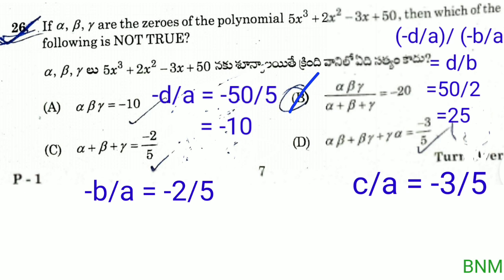Option B is product of the zeros divided by sum of the zeros. Product of the zeros is minus 10, sum of the zeros is minus 2 by 5. So that gives 50 by 2, which is equal to 25. But the given value is minus 20, which is wrong. Therefore, option B is not true.